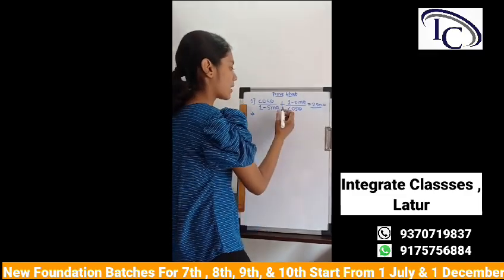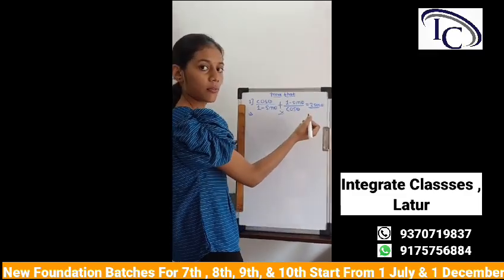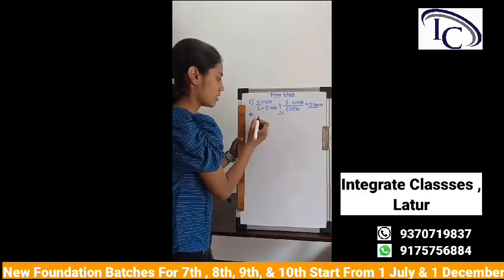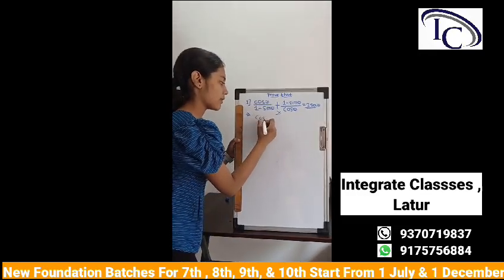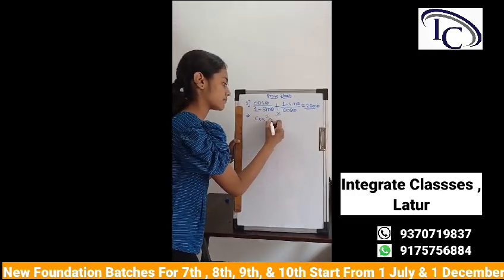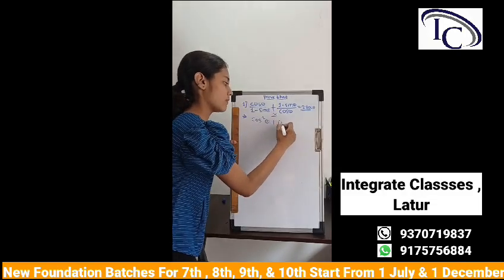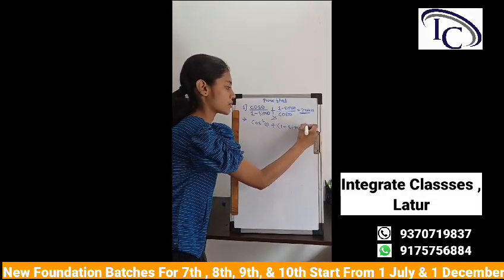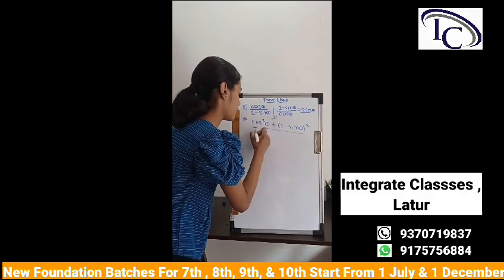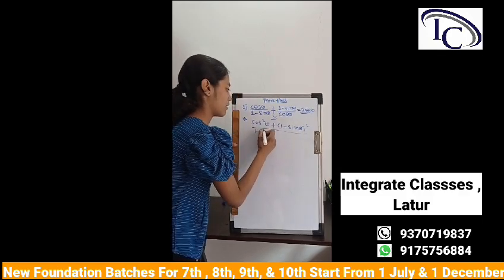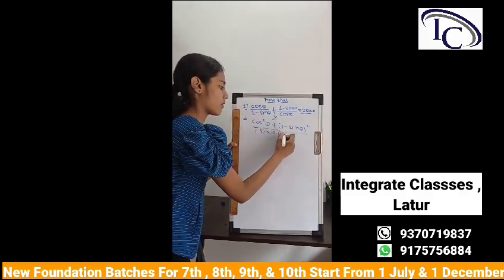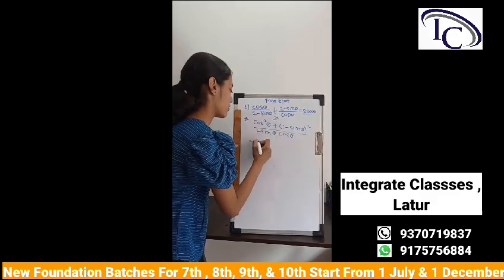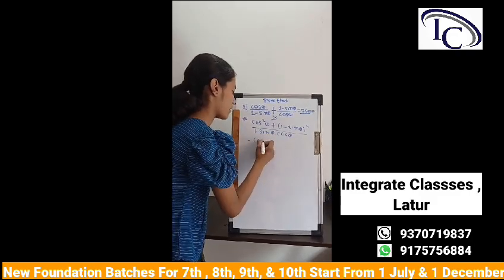Now, we do cross multiplication — multiplying the denominators. That gives us cos²θ + (1 − sin θ)², expanded as (1 − sin θ) into (1 − sin θ), all over cos θ. We apply the (a − b)² formula here.